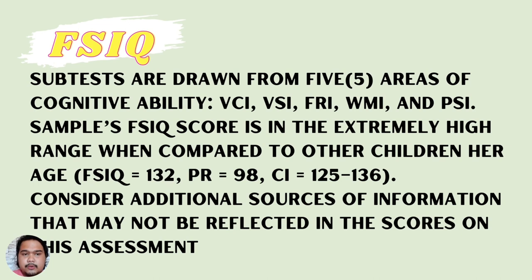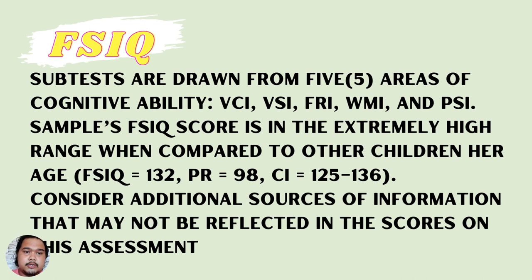In WISC-5 interpretation, we have the Full-Scale IQ. Subtests are drawn from five areas of cognitive ability: VCI, VSI, FRI, WMI, and PSI — the Verbal Comprehension Index, Visual Spatial Index, Fluid Reasoning Index, Working Memory Index, and Processing Speed Index. For example, a sample FSIQ score in the extremely high range compared to other children the same age is 132, with a percentile rank of 98 and a confidence interval ranging from 125 to 136 points.